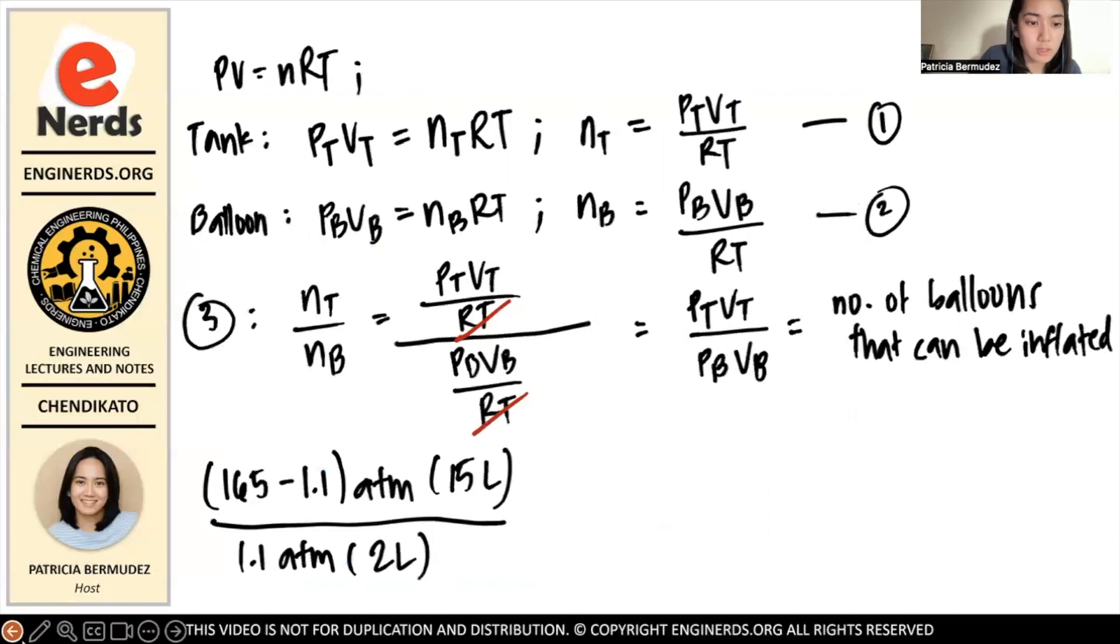So, if we do unit cancellations, you know that the ATM will cancel as well as the liters. So, the number of balloons, it's actually unitless. Because, how many balloons? You don't say three atmosphere balloons, no? You just say, how many? So, you say three. You just say a digit without a unit.